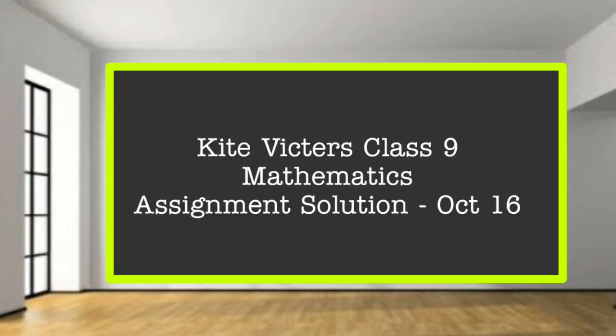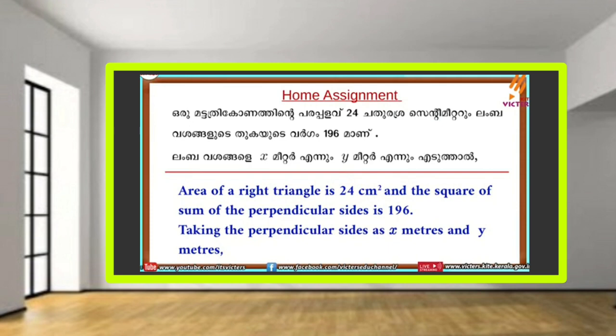Hello, dear friends. Today we are going to discuss the assignment questions. First question: The area of the right triangle is 24 cm². The square of the sum of the perpendicular sides is 196. Taking the perpendicular sides as x and y, find what is x and y.